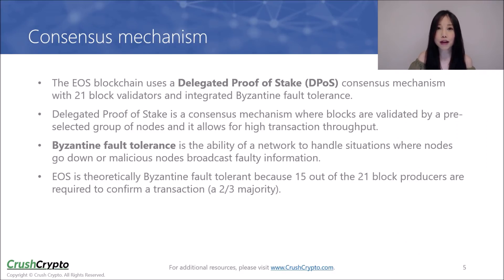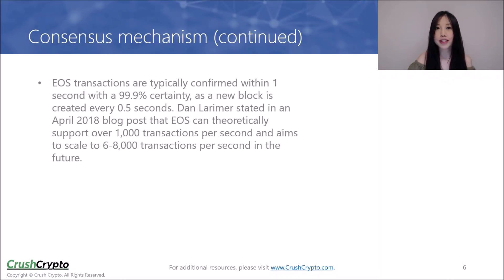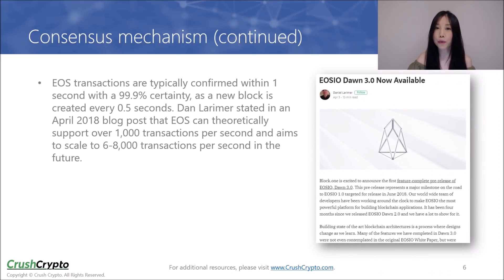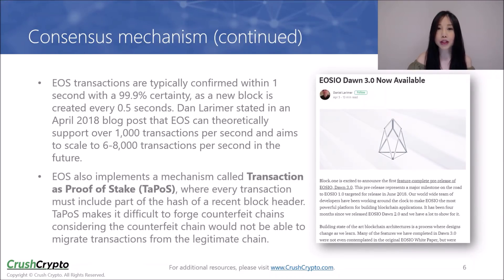For a more detailed discussion on Byzantine fault tolerance and the reason why a two-third majority is important, please refer to our article on Practical Byzantine Fault Tolerance on our website. EOS transactions are typically confirmed within one second with a 99.9% certainty, as a new block is created every 0.5 seconds. Dan Larimer has said in a blog post that EOS can theoretically support over 1,000 transactions per second, and it aims to scale to 6,000 to 8,000 transactions per second in the future. EOS also implements a mechanism called Transaction as Proof of Stake, where every transaction must include part of the hash of a recent block header. This makes it difficult to forge counterfeit chains, as a counterfeit chain would not be able to migrate transactions from the legitimate chain.